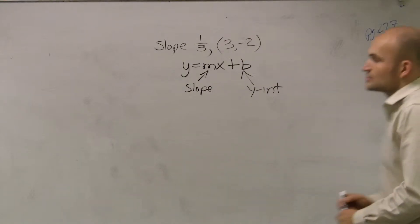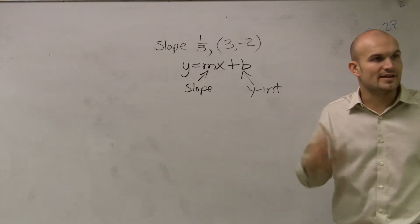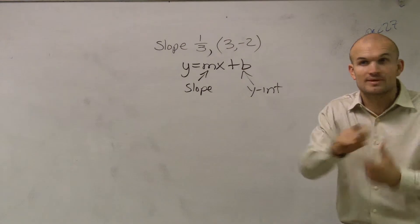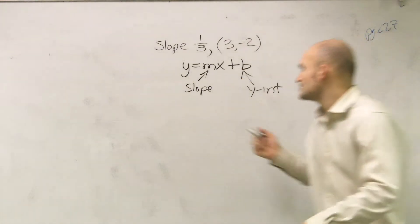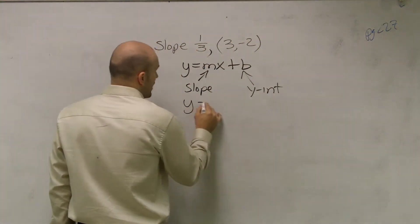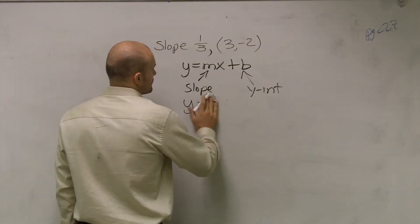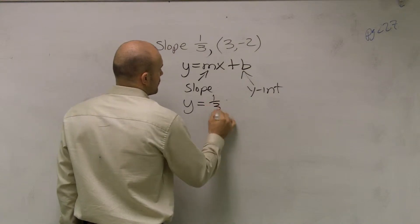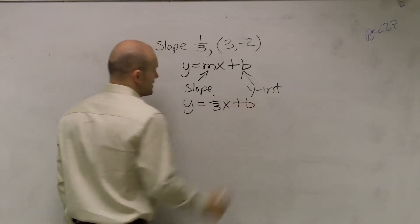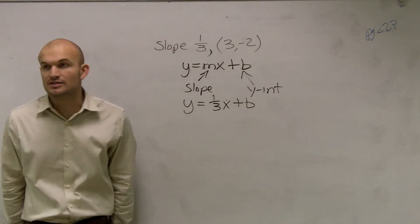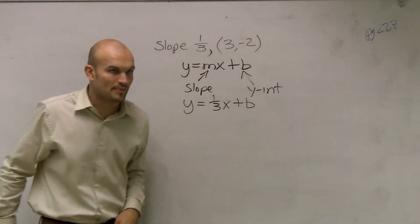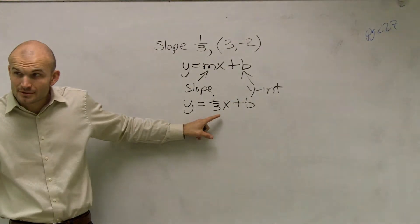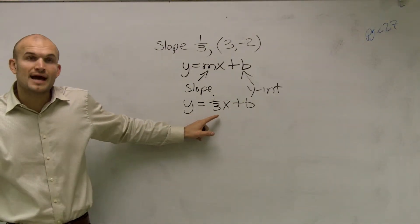Now, if I want to find the equation of the line, I have to know what the slope is. Does this problem provide me with the slope? Yes, it does. So I can write y equals one-third x plus b. I still don't know what the y-intercept is. So whenever you're given a problem where it tells you what the slope is, put it in for m. Just plug it in, you know it's there.